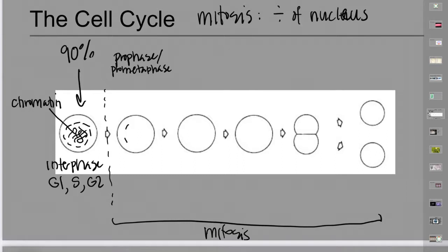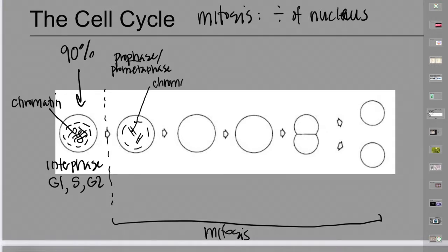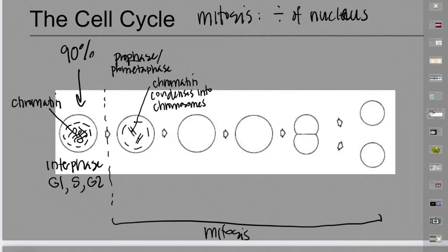The first thing that has to happen is the DNA needs to be condensed so it can be divided into two piles. The first stage is prophase, which can be divided into prophase and prometaphase. What happens is the chromatin condenses into chromosomes. I'll draw two chromosomes here — the chromatin condenses into chromosomes. That's what's happening during prophase.